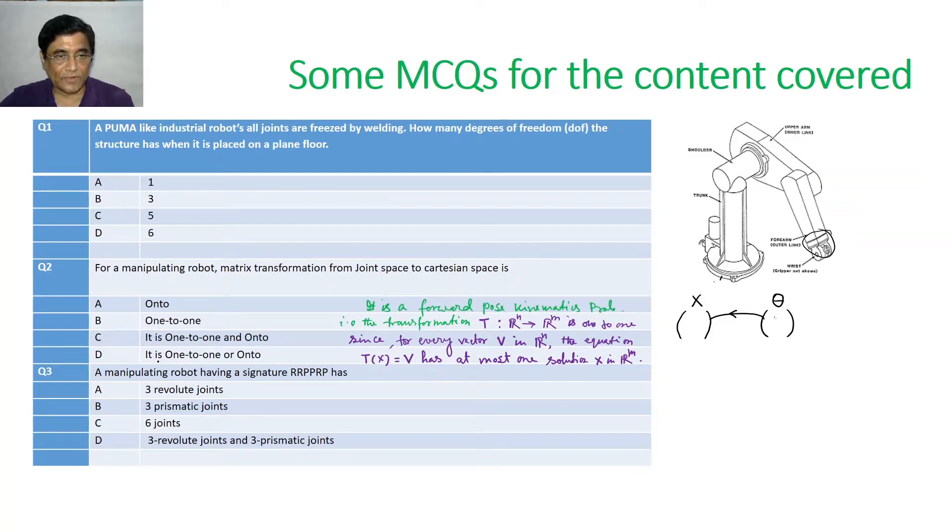Third question. A manipulating robot having a signature R, R, P, P, R, P. So, you know how to read signatures. R is for revolute joint and P is for prismatic joint. Now, you see, it has R, R, two R, one to two P, two P and then followed by R and followed by P.